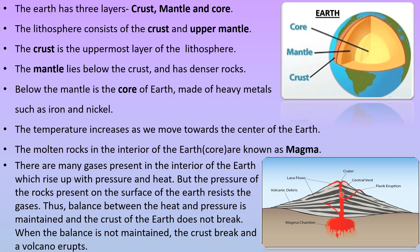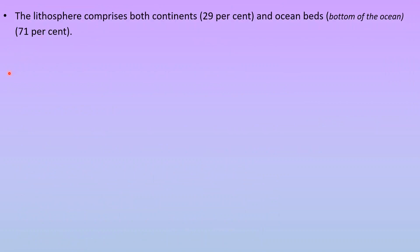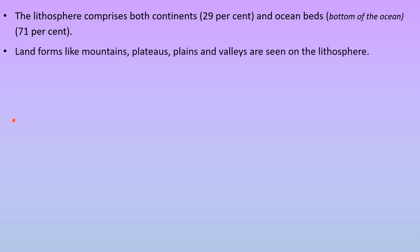The lithosphere comprises both 29% of continents and 71% of ocean beds — 'ocean beds' meaning the bottom of the ocean. Landforms like mountains, plateaus, plains, and valleys are seen on the lithosphere.